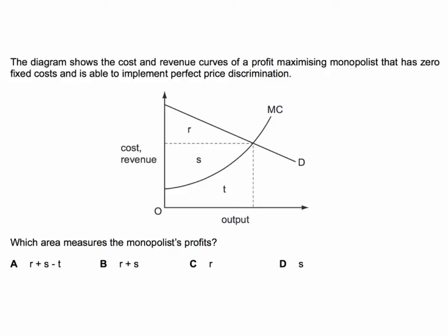The diagram shows the cost and revenue curves of a profit-maximising monopolist, but we're told they have zero fixed costs. And they're able to implement perfect price discrimination — sometimes called first degree price discrimination. The question is: which area measures the monopolist's profits?